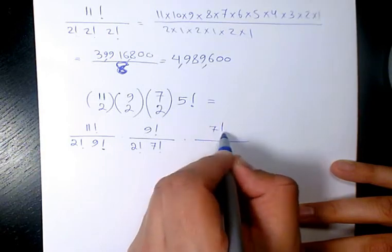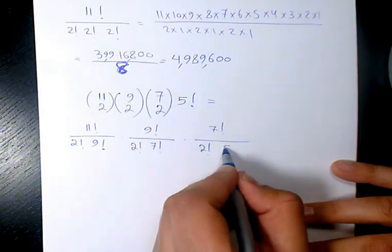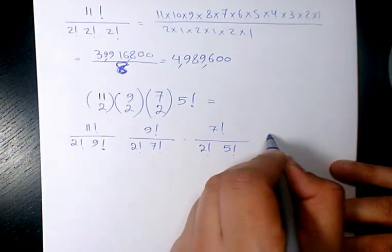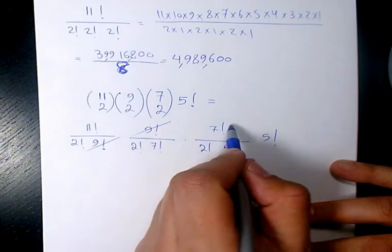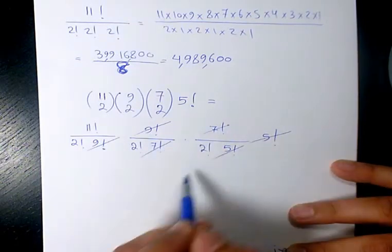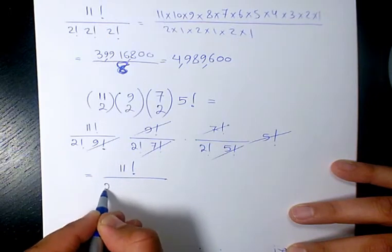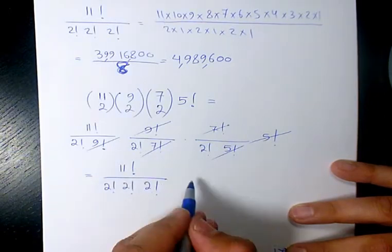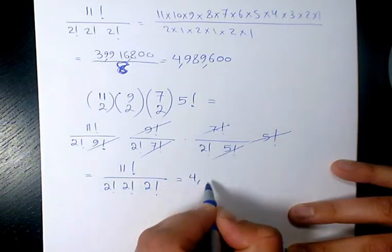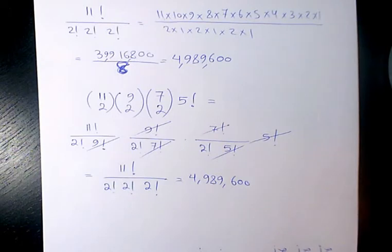Now this and this cancel out, this and this cancel out, this and this cancel out. So the answer is going to be again 11 factorial divided by 2 factorial, 2 factorial, and 2 factorial. That's going to give us the same answer.